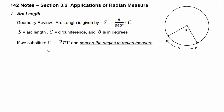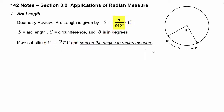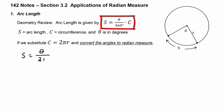If we substitute that circumference equals 2 pi R into the equation and we convert the angles to radian measure — so theta will have to be in radians and 360 degrees will change to 2 pi radians — then this equation will become S equals theta divided by 2 pi, times 2 pi R.